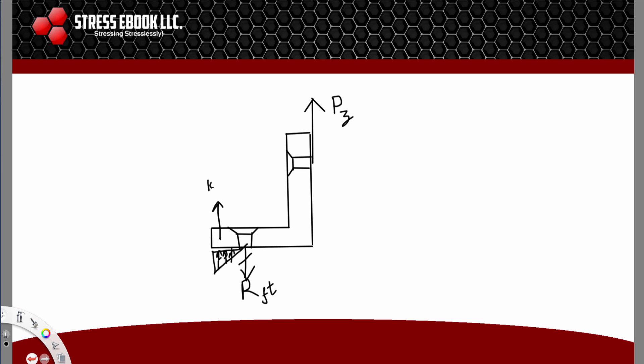We have a reaction load distributed here. If this distance is X, then this here would be one-third of the total X and this here would be two-thirds of the total X. From the fastener axis, this would be two-thirds of X, and this here would be one-third of X.